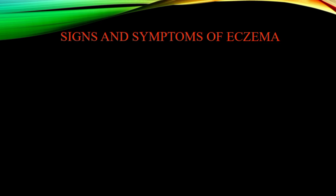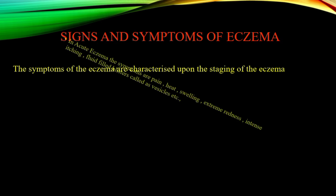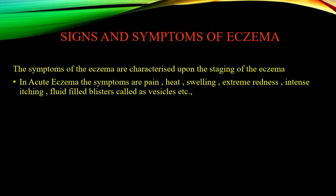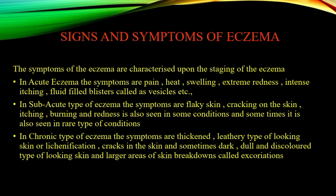Coming to the signs and symptoms of eczema, these are characterized based on the staging. In acute eczema the symptoms include pain, heat, swelling, extreme erythematous redness, intense itching, and fluid-filled blisters called vesicles. In subacute eczema, symptoms include flaky, scaly skin, cracking, burning, and redness in some conditions.